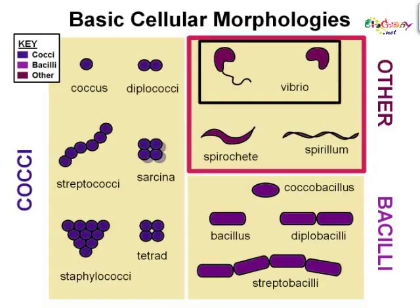If found in pairs, they are called diplococci. Threes are a triad, and groups of four are called tetracoccus. Other group types include streptococcus, which are cocci in chains, sarcina, cubes of eight, and staphylococcus, irregular clusters. Diseases caused by cocci include, but are not limited to, pneumonia, tonsillitis, endocarditis, meningitis, sepsis, and various skin diseases.